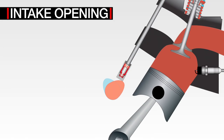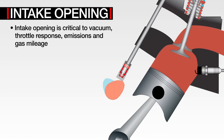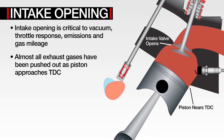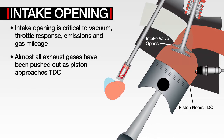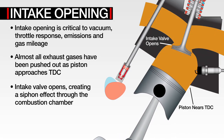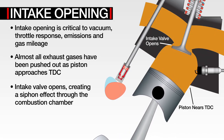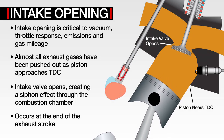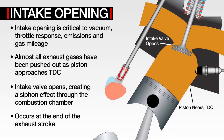Let's begin with intake opening, where overlap begins, which is very critical to vacuum, throttle response, emissions, and gas mileage. The exhaust stroke of the piston has pushed out nearly all of the burned mixture, and as the piston approaches the top, the intake valve opens, starting a siphon effect through the chamber. This occurs at the end of the exhaust stroke.